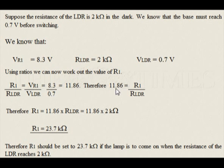Therefore, 11.86 equals R1 divided by RLDR. Therefore, R1 equals 11.86 times RLDR, which equals 11.86 times 2 kOhms. R1 equals 23.7 kOhms.